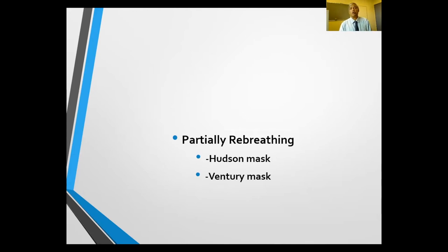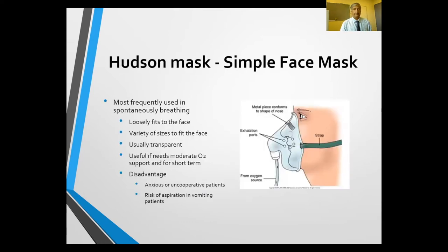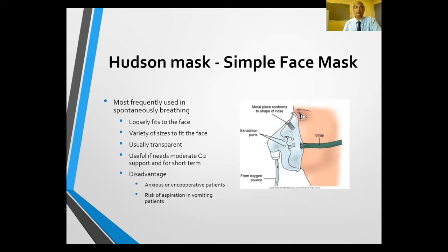Partially re-breathing systems include two masks: the Hudson mask and the Venturi mask. We call them partially re-breathing because we can re-breathe our own exhaled air through the mask. The Hudson mask — a simple face mask — is probably the most frequently used device to deliver oxygen in the health system, in or out of hospital. It loosely fits onto the face with a metal piece conformed to the nose. There are exhalation pores to help exhale air out. It's available in many sizes and is useful if somebody needs a moderate amount of oxygen delivery. The disadvantage is that if somebody is anxious or delirious, they will just take it off, and there is a risk of aspiration if somebody is comatose.